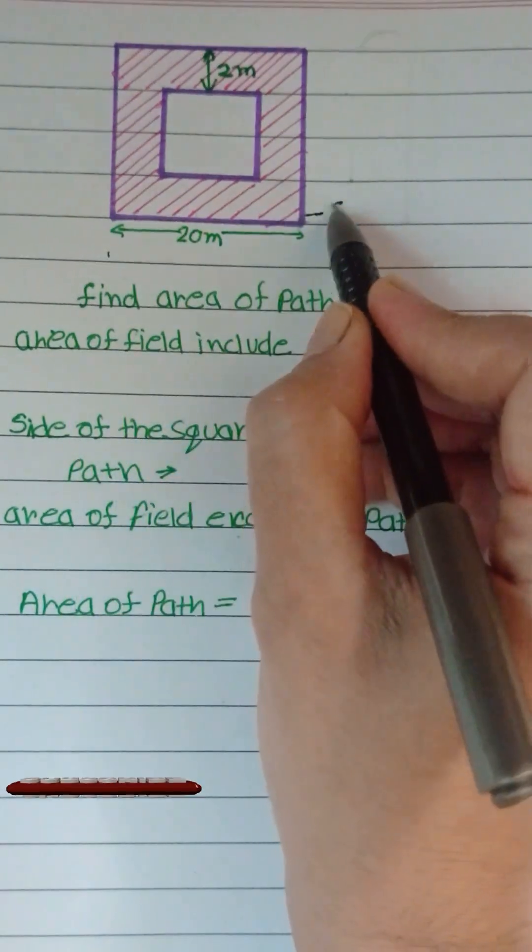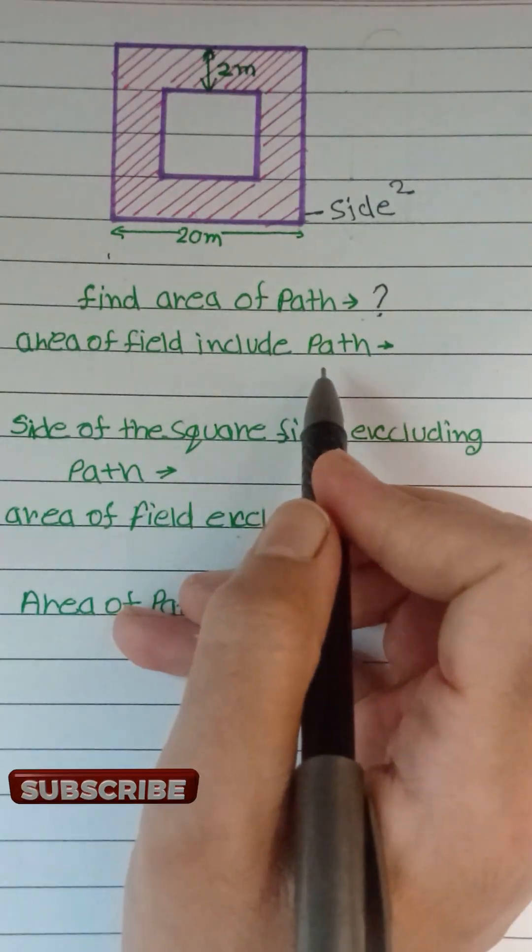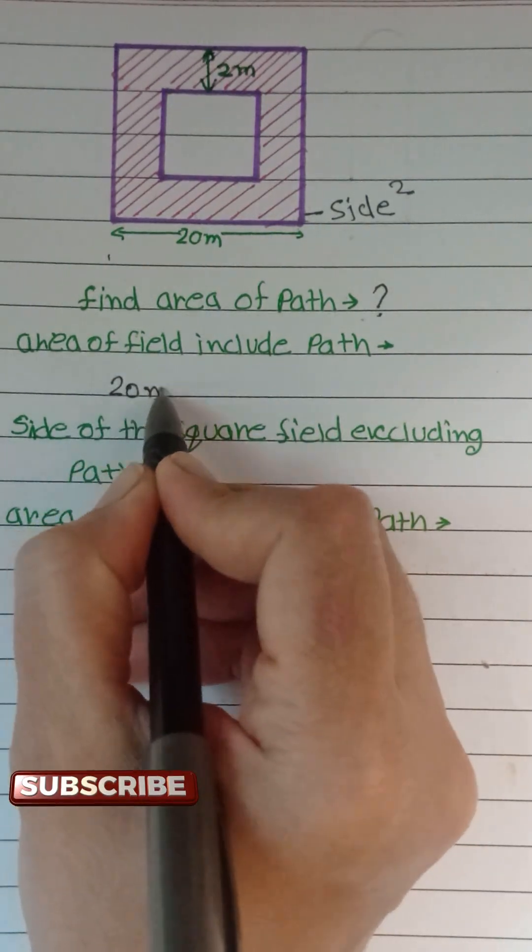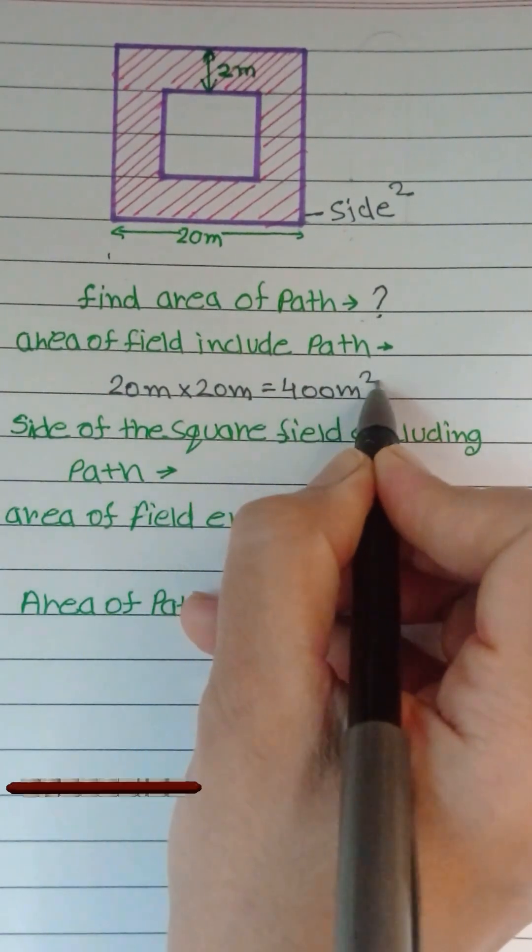First we find area of outer field. The outer field is a square so area is side square. Area of field including path. Side of outer field is 20 meter so area of outer field is 400 meter square.